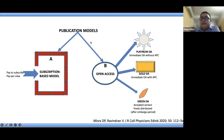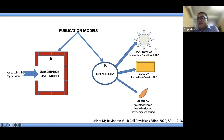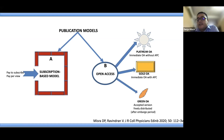How are scientific journals published? There are broadly two categories: those published open access and those published in a subscription-based model. In open access, content can be accessible immediately without any article processing charges — called platinum open access — or freely accessible with article processing charges levied to the authors, called gold open access, or green open access, wherein the accepted version is freely distributed after a certain embargo period, say six months or one year.